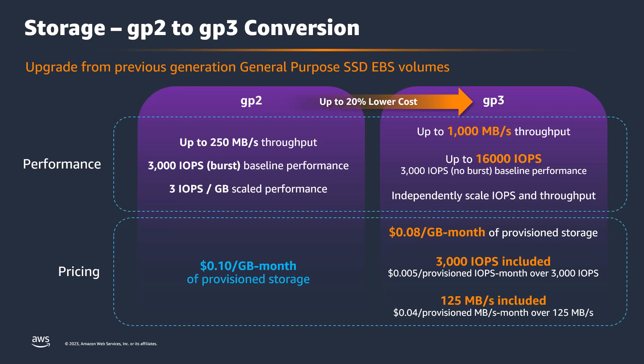Another major change with GP3 volumes was the baseline IOPS performance. GP3 volumes start at 3,000 IOPS. By comparison, GP2 volumes would have to reach one tebibyte in size before reaching the same performance capability. For something like Windows Server, which usually has a C drive much smaller than one tebibyte, upgrading from GP2 to GP3 is a significant performance improvement.